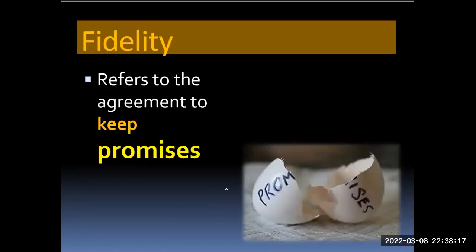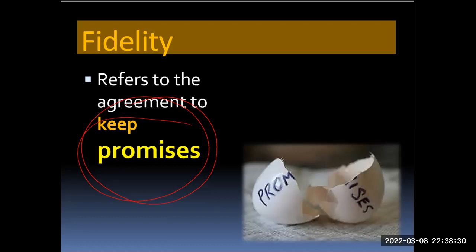Fidelity refers to the agreement to keep promises. It is rooted in respect for persons and truth-telling. Faithfulness to promises is important in relationships because it indicates the level of esteem held for one another and it establishes trust. When a person makes a promise, he or she creates expectations in another — the person expects to rely on the promise and have a valid claim that it will be kept. Promises to peers are often not explicit but are shown through actions, such as honesty and not taking advantage of each other.